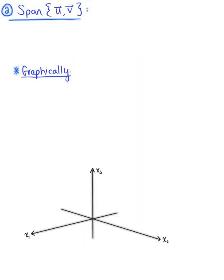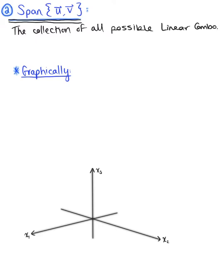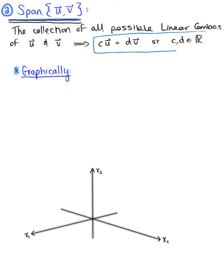In case two, we want to consider the span of vector u and vector v. The span of vector u and vector v is the collection of all possible linear combinations of these two vectors. We can denote this as the sum of all scalar multiples c times vector u plus d times vector v, where c and d are the scalars, or weights, or coefficients.